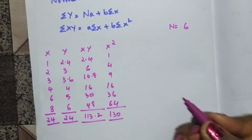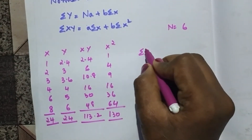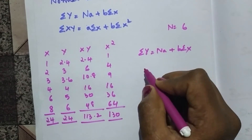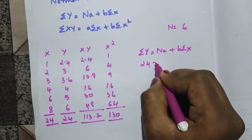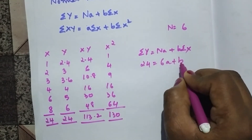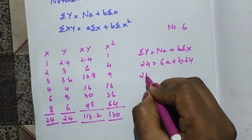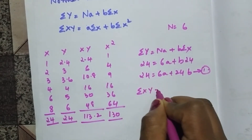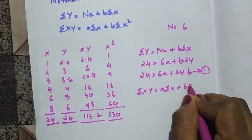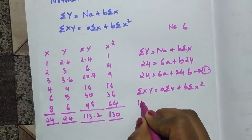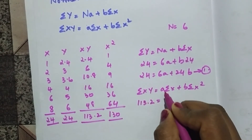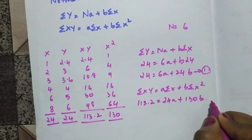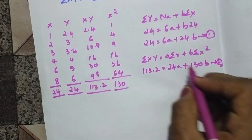Now let's apply the values into the normal equations. Taking the first equation: summation y = na + b·summation x, substituting gives 24 = 6a + 24b — this is equation one. For the second equation: summation xy = a·summation x + b·summation x², substituting gives 113.2 = 24a + 130b — this is equation two.